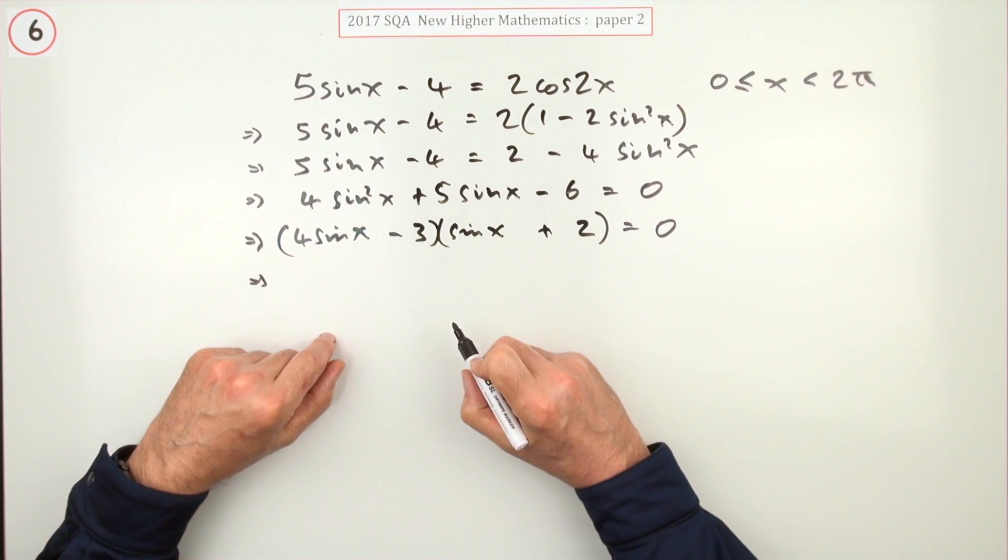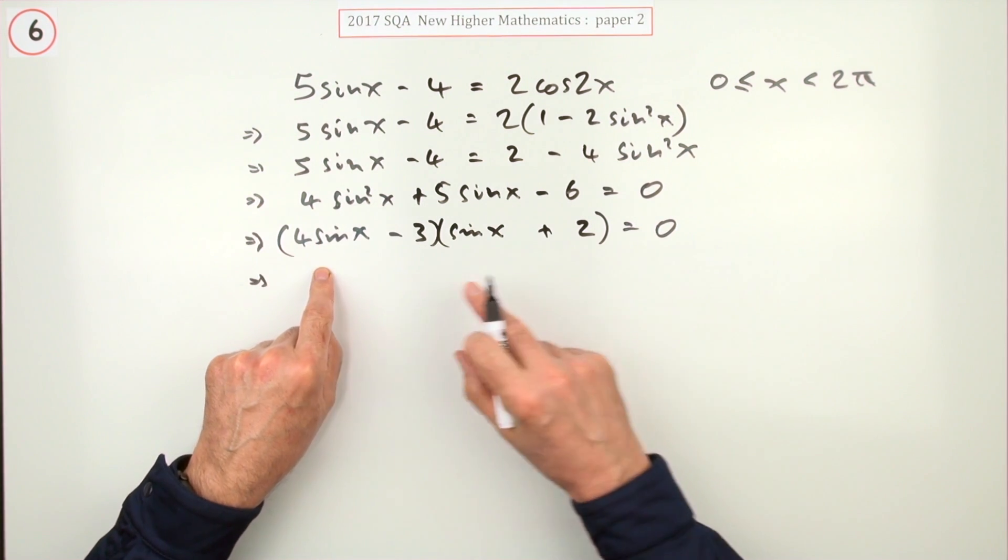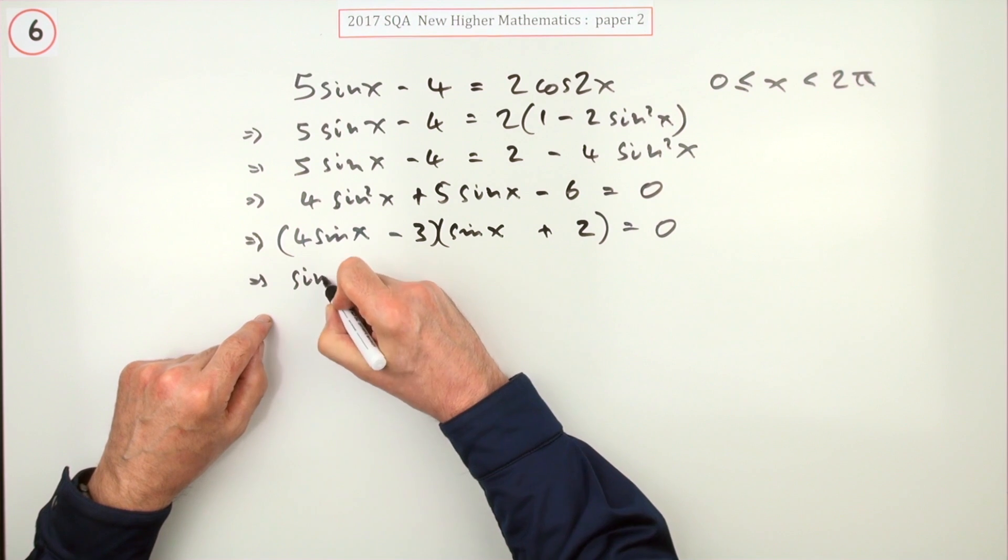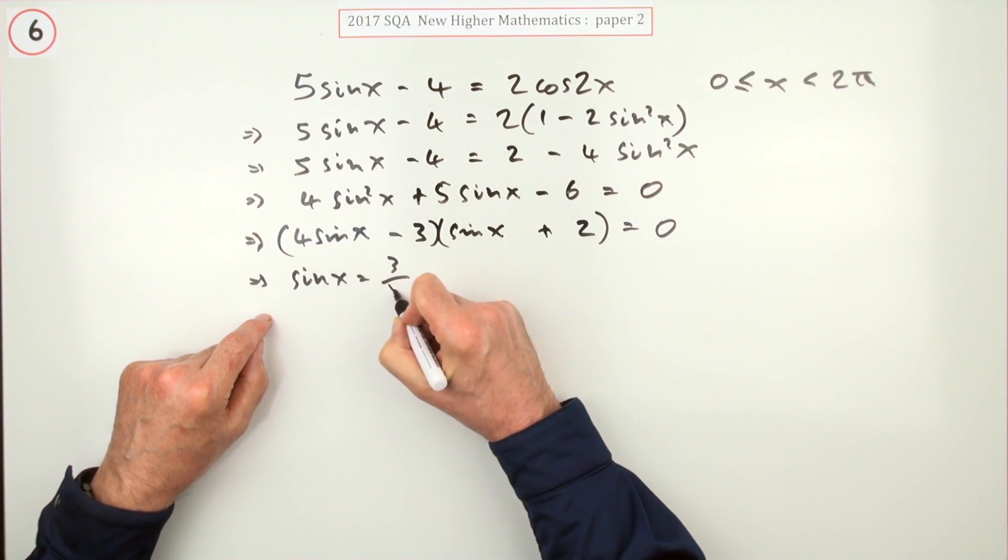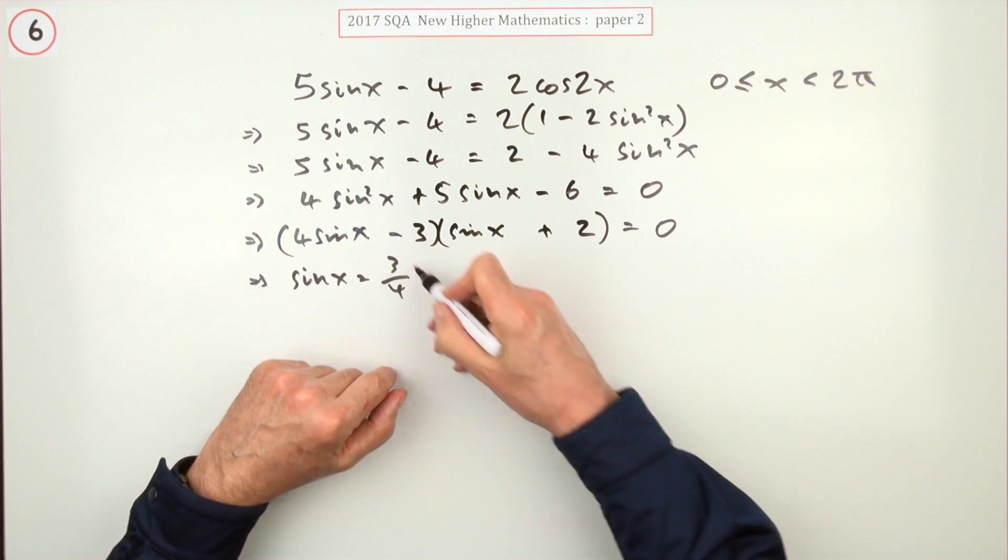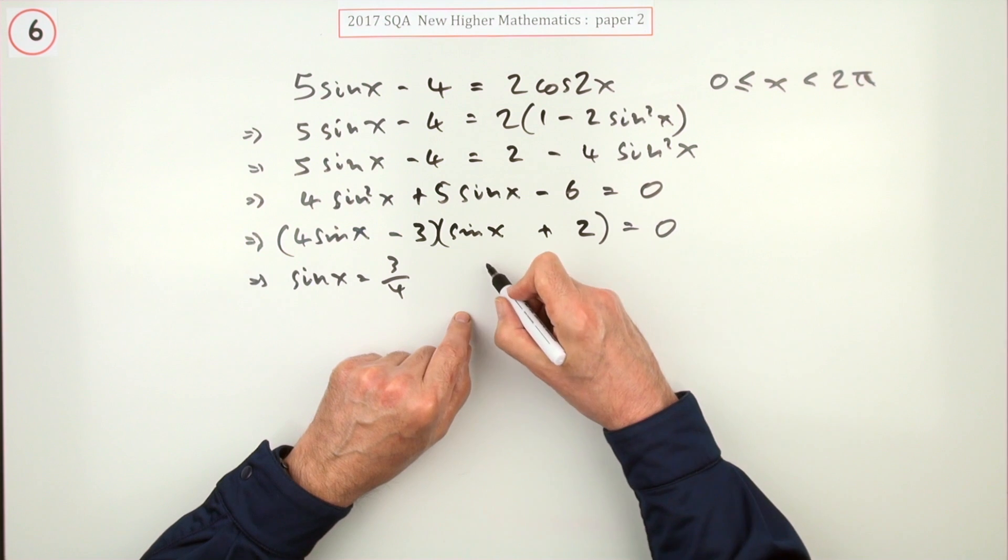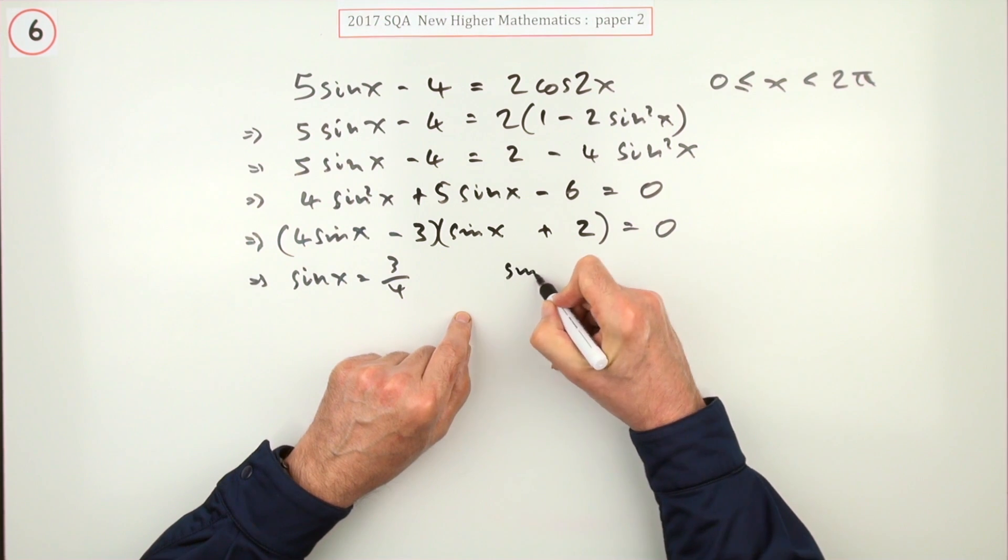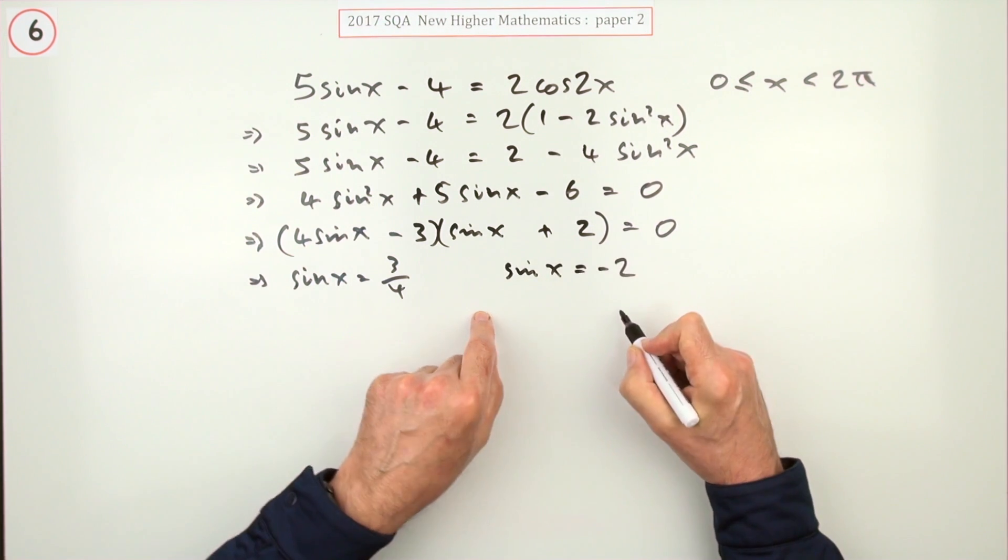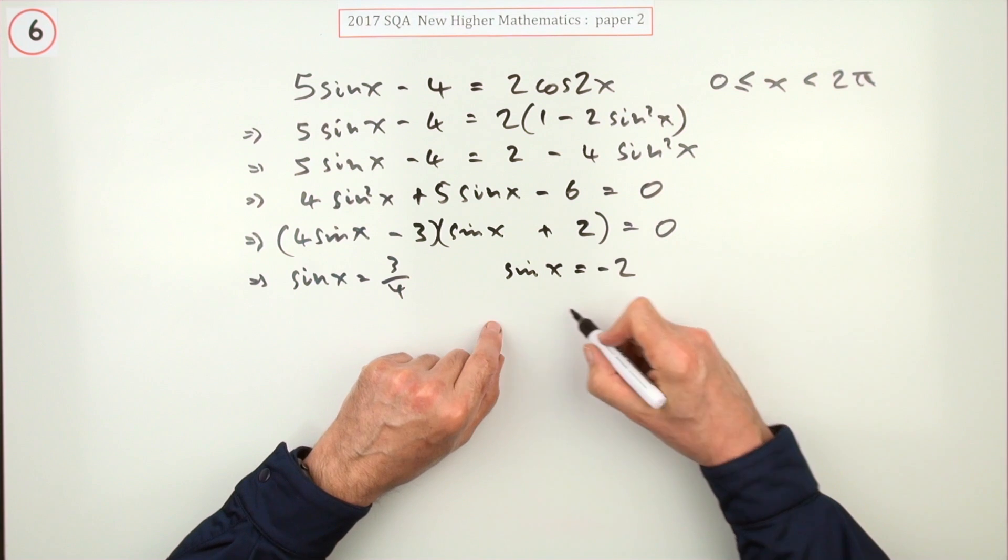Well, if they multiply to give zero, either this is zero, in which case sinx is three-quarters—that's fine. Well it's not fine because I don't know that one, I'll use a calculator. Or in this case, sinx would have to be negative two, which is even better because that won't work. There's no solution to that.